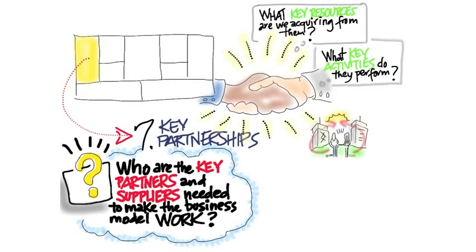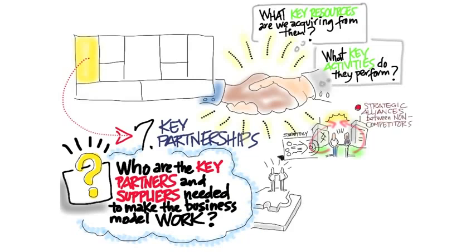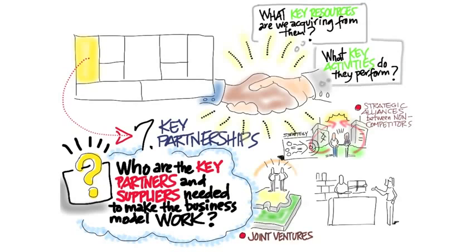What you need to understand is what type of relationships do you need to have with them. Are these relationships going to be strategic alliances between non-competing companies? Are they going to be joint ventures? Are they going to be coopetition? What are you going to do and what are they going to do? In this lecture we're going to explain the differences, the pitfalls, and the successes between each.